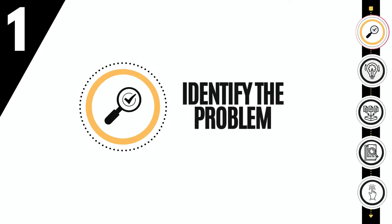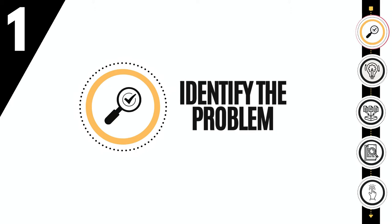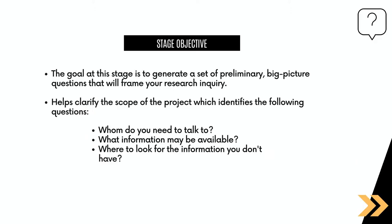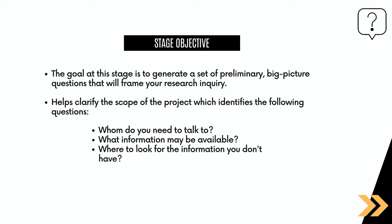Stage 1: Identify the Problem. The goal at this stage is to generate a set of preliminary, big-picture questions that will frame your research inquiry. It helps clarify the scope of the project, which identifies the following questions: Whom do you need to talk to? What information may be available? And where to look for the information you don't have?